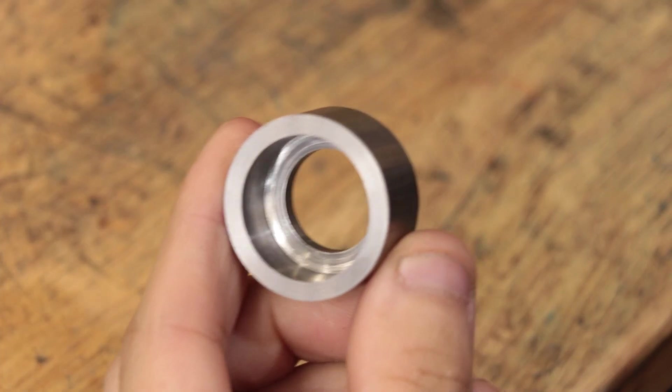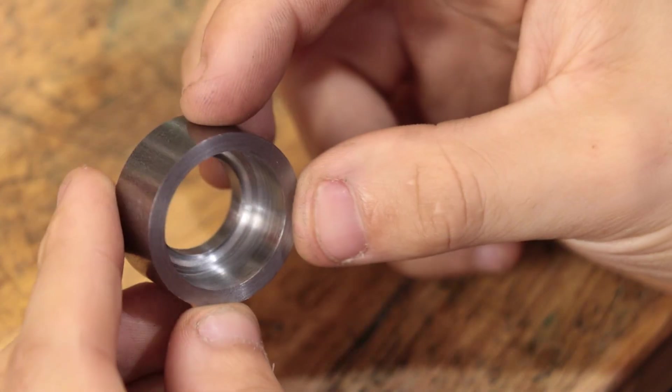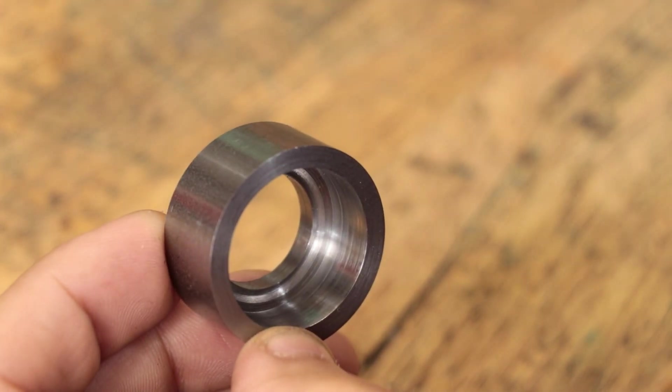I also quickly looked at using these tools to do counterboring, but due to the nature of the cutting edge, they do leave a very deep v-groove at the bottom of the bore, which would need cleaning up.